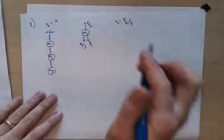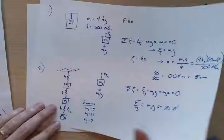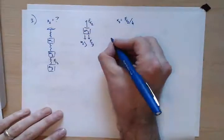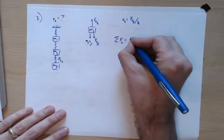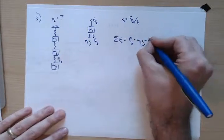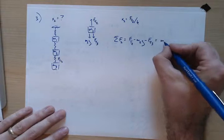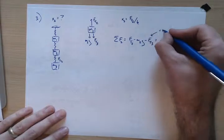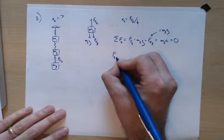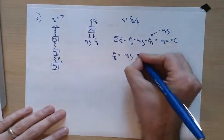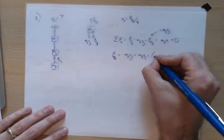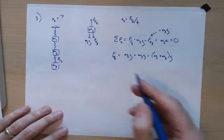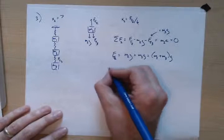The tension in the bottom spring is what we calculated in part two — I have a general equation, not just a number. When I write the sum of forces on mass two: ft2 minus m2g minus ft3 equals zero. And I know ft3 equals m3g, so solving for ft2 gives m2g plus m3g. We could have guessed this — that top spring is holding both masses two and three, so it bears their combined weight.